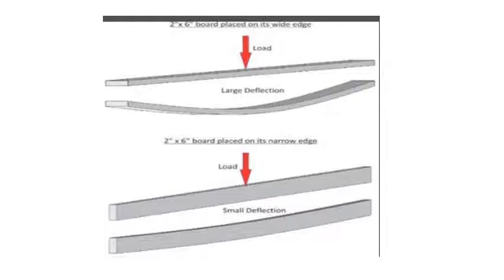The importance of moment of inertia can be explained as follows. Moment of inertia is a property which measures the resistance of the cross section to bending. Consider a beam of width B and depth D placed flat with a load applied — the beam bends and the deflection is very large. On the other hand, if the same beam is turned so that the depth is vertical, and the same load is applied, the deflection is much less.